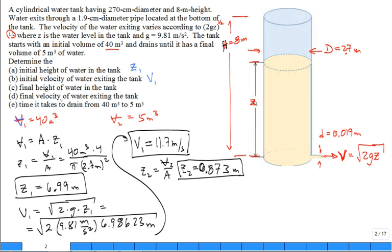Part d, final velocity. The final velocity, same type of equation, square root of 2gz2. You find that the final velocity isn't 11.7 meters per second anymore. It comes out at 4.14 meters per second. So it's a lot slower, isn't it? It's slower coming out at the end when the volume is only 5 cubic meters in the tank.